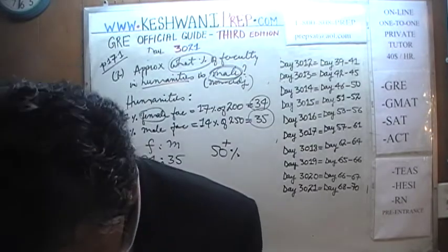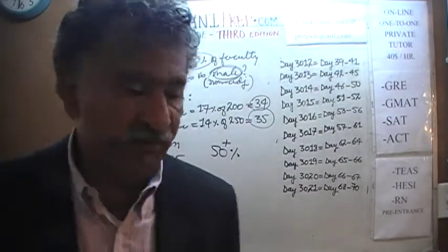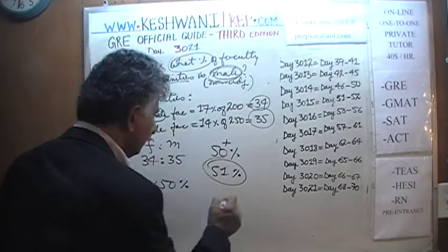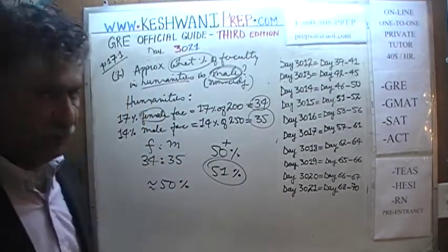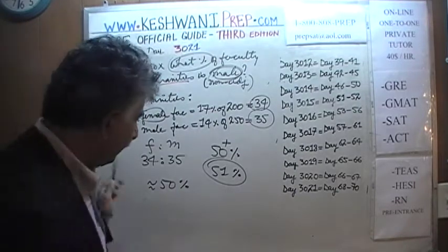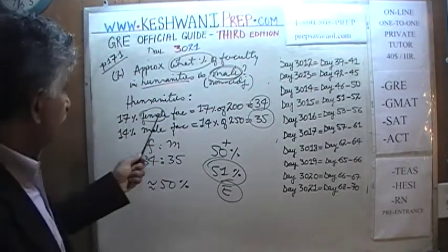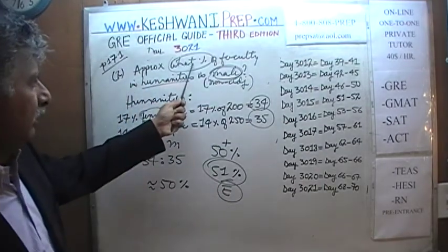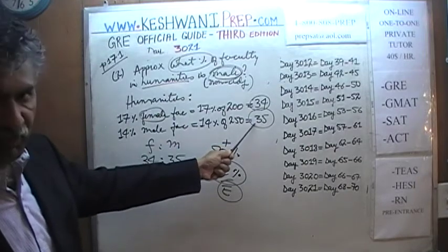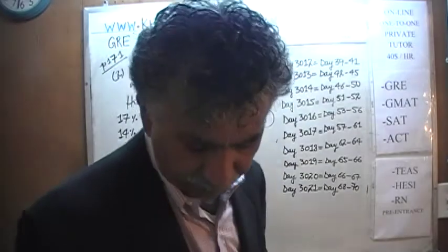Looking at the answer choices, the only one above 50% is 51%. We know it is not 45% — that's answer choice D. We are looking for E. Because the ratio of male is 35, which is slightly more than 50%, that shows up as 51%.